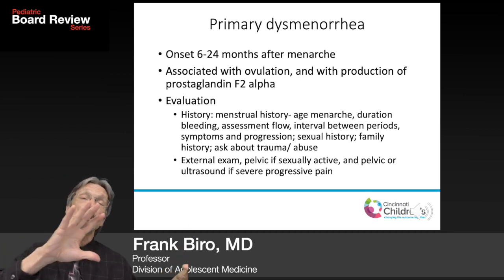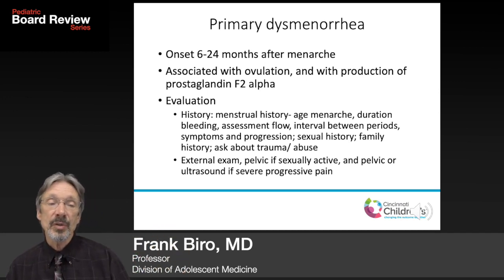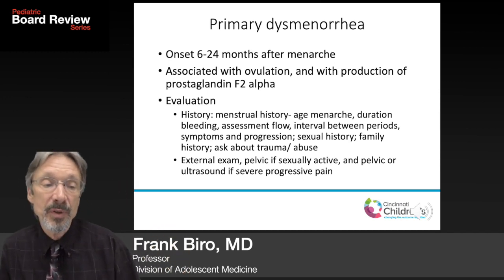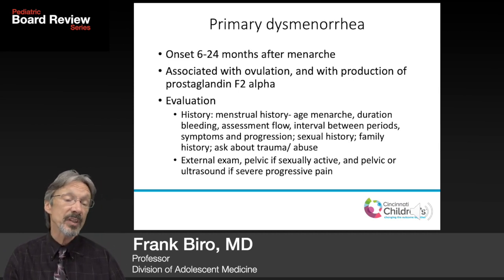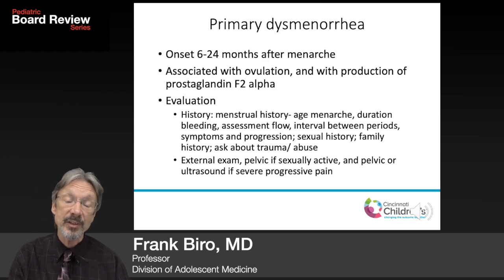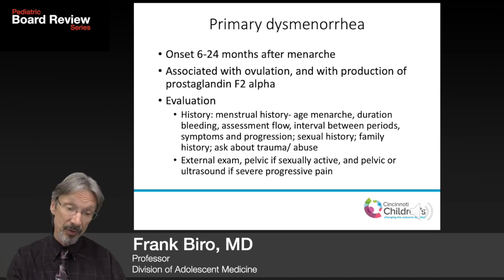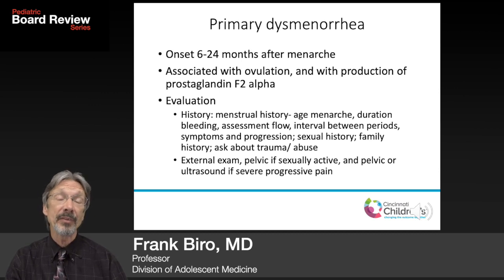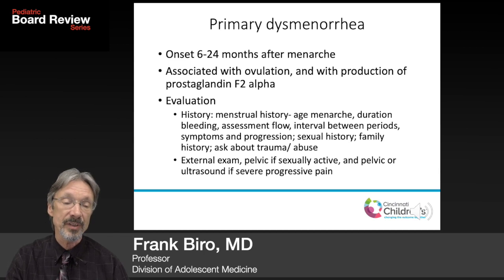Primary dysmenorrhea typically occurs 6 to 24 months after menarche, and it is associated with ovulatory cycles — remember many early cycles are anovulatory. It starts with ovulation and the production of prostaglandin F2-alpha. Evaluation includes menstrual history: age of menarche, duration of bleeding, assessment of flow, interval, symptoms, progression, sexual history, family history of dysmenorrhea, and secondary causes.